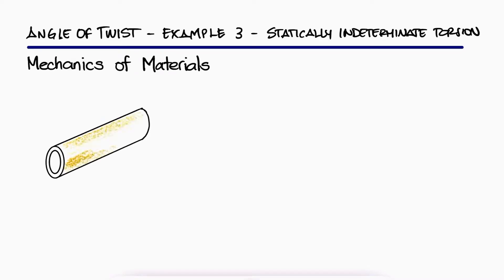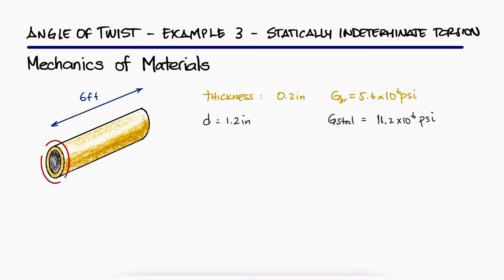A composite shaft consists of a 0.2 inch thick brass jacket bonded to a 1.0 inch diameter steel core. If the shaft is subjected to a 5 kip inches torque, what is the angle of twist of end B relative to end A and the maximum shearing stress in the brass jacket and the steel core?